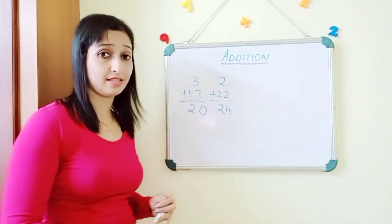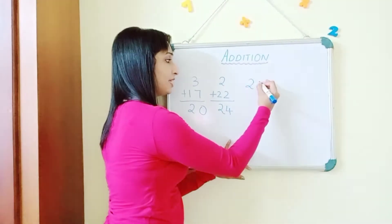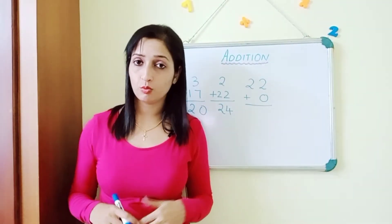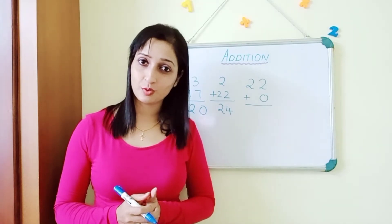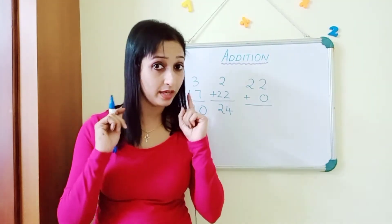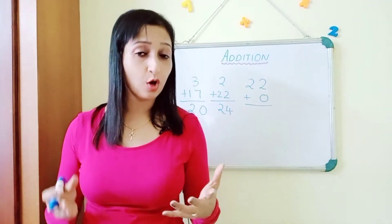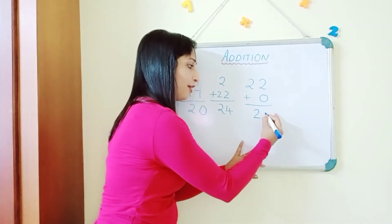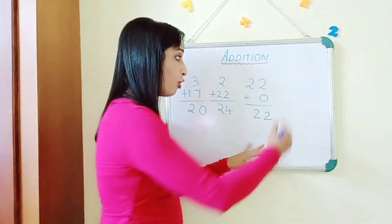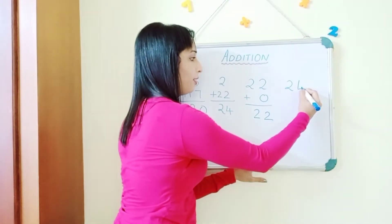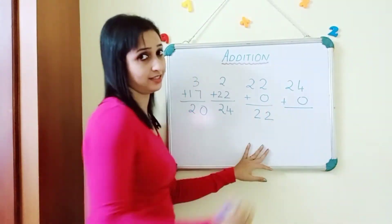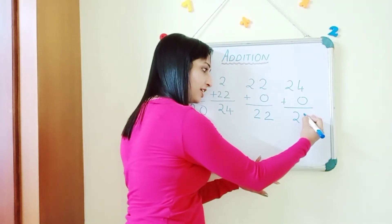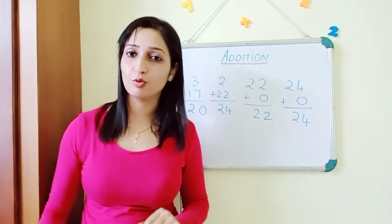Now what happens when a number is added with zero? Always remember: any number added with zero gives the same number itself. So twenty-two plus zero equals twenty-two. Twenty-four plus zero equals twenty-four. When a zero comes, you always get the number itself.